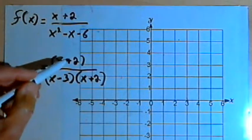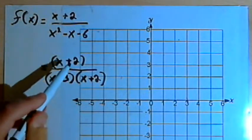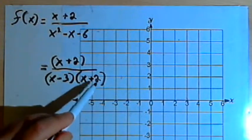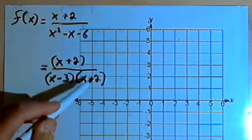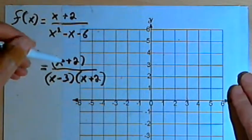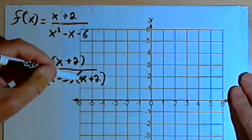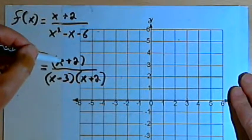Now when we look at this factored form we realize we've got the same factor in the numerator and the denominator. That's this x plus 2. When we've got a common factor in both the numerator and the denominator that means we're going to have a hole in the function.